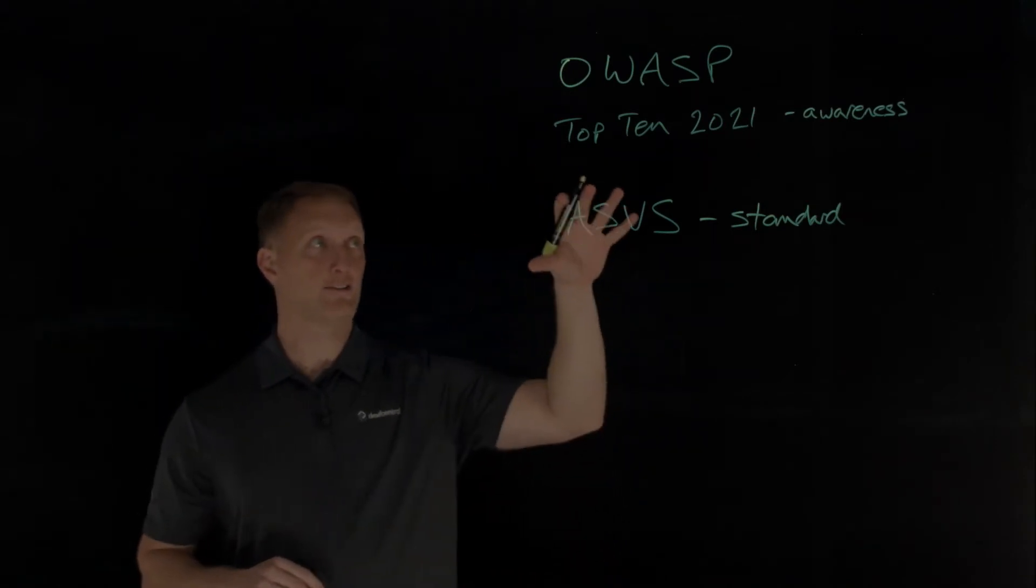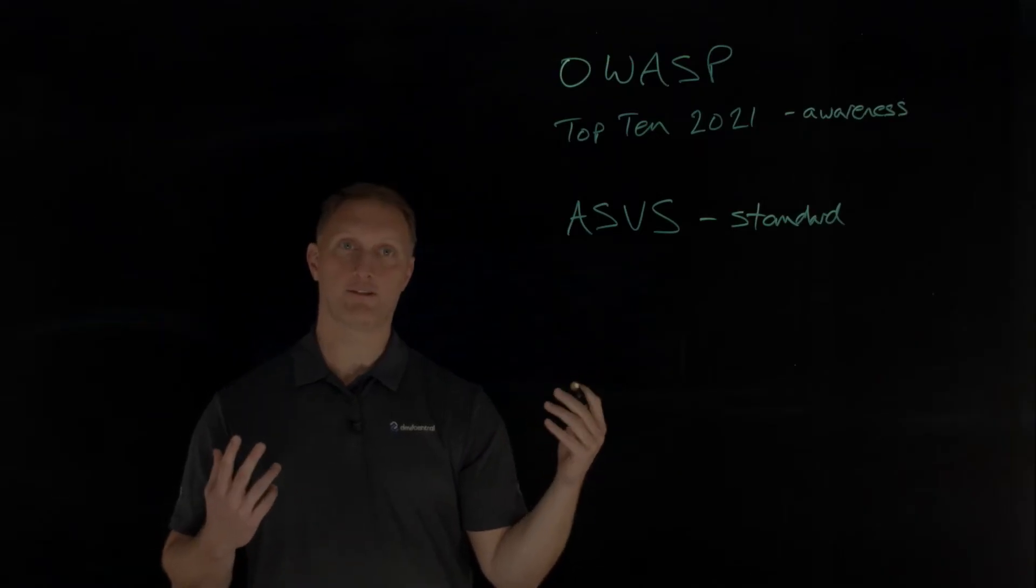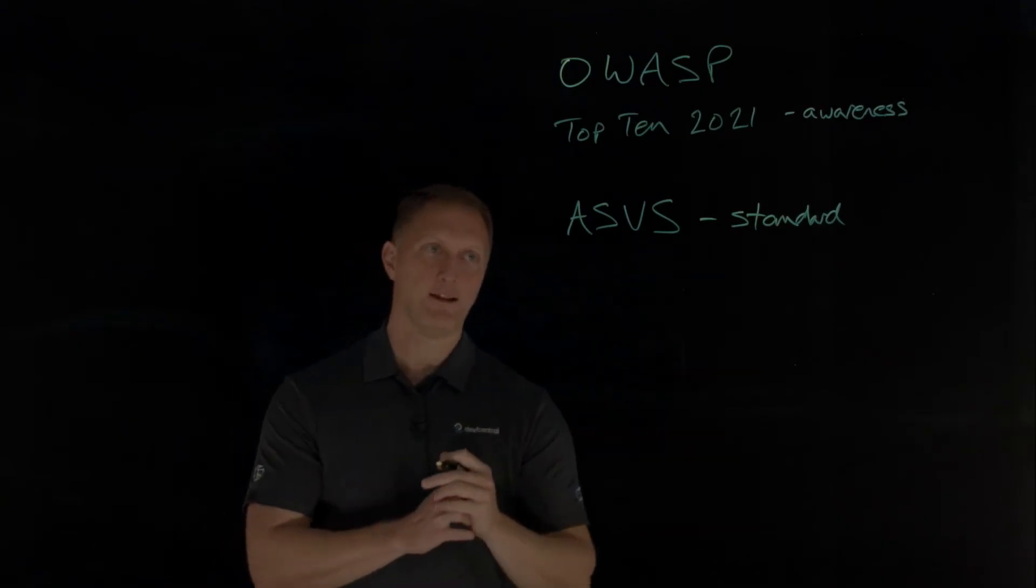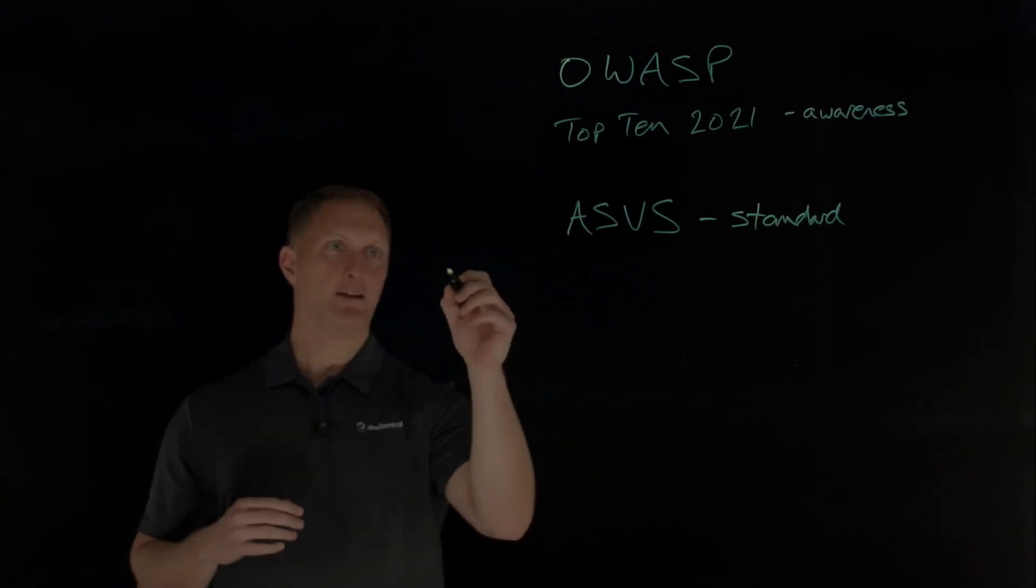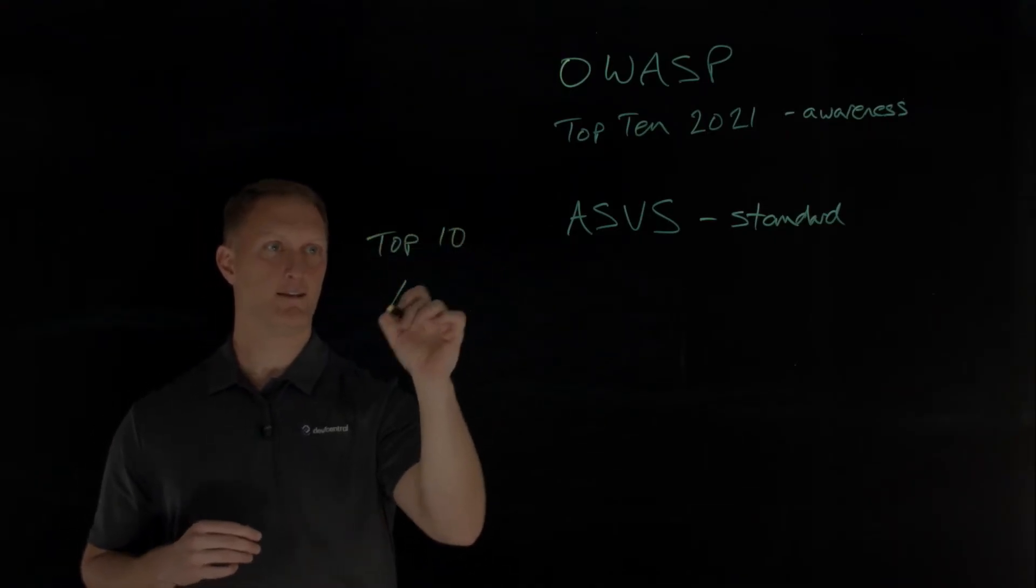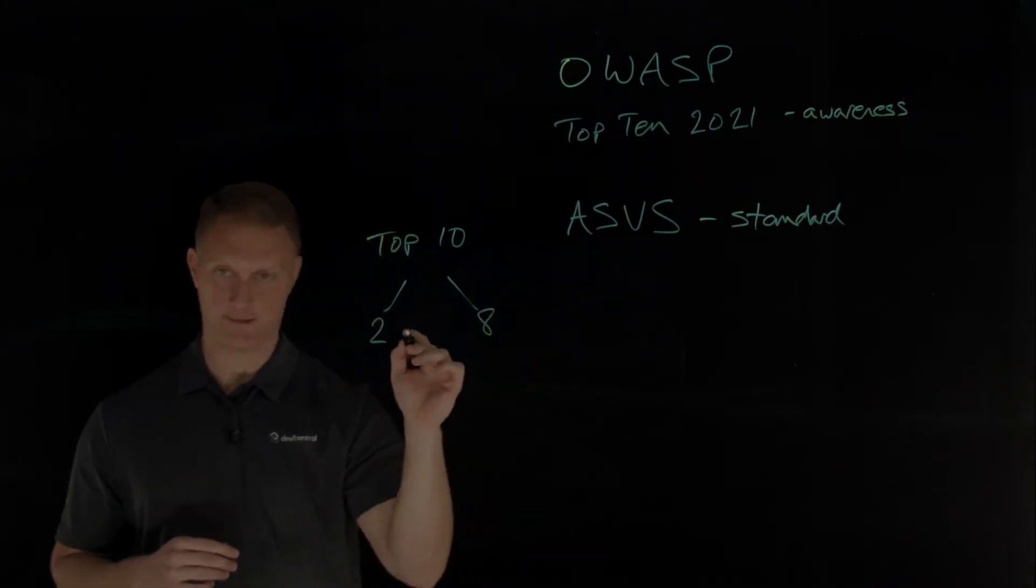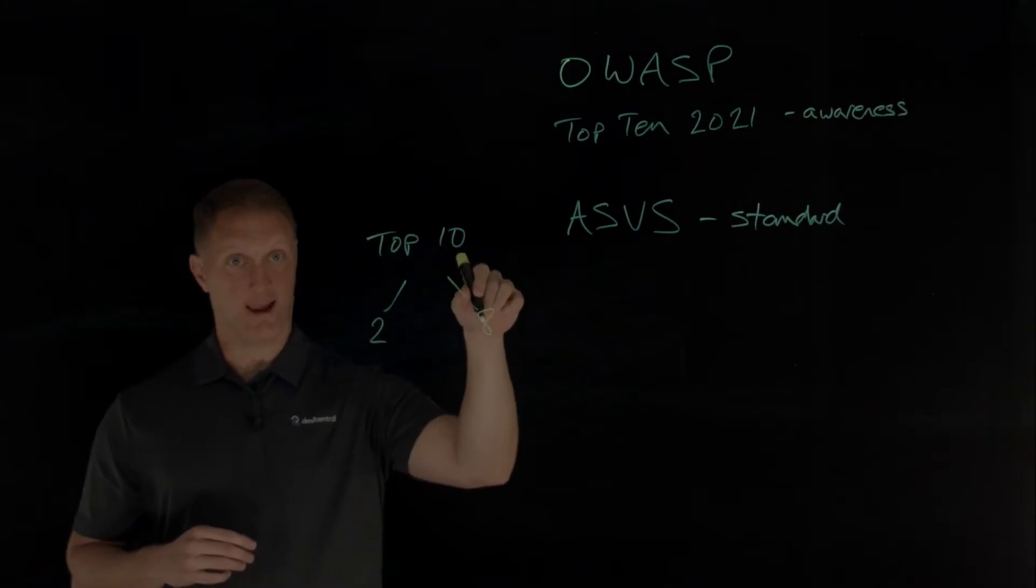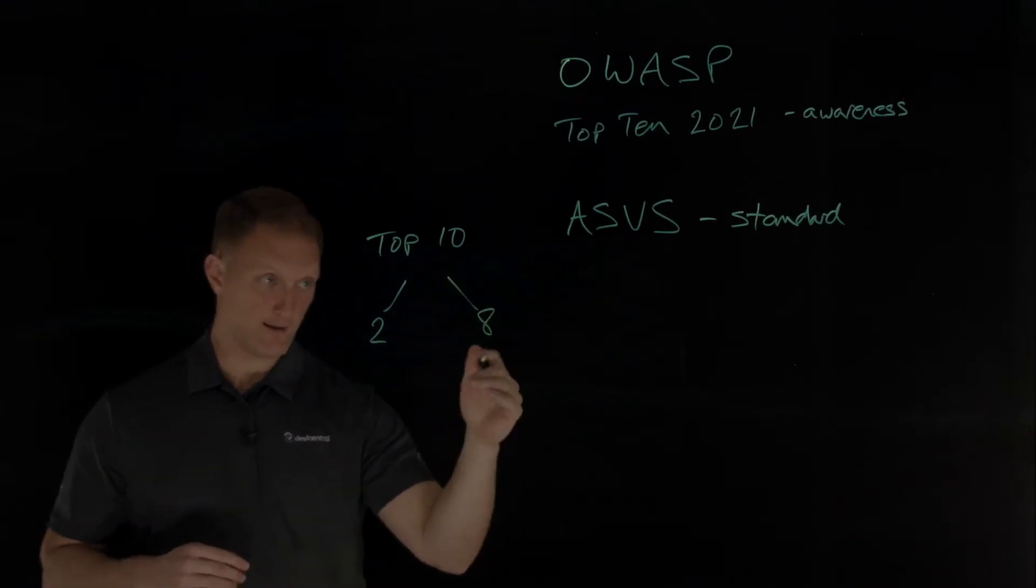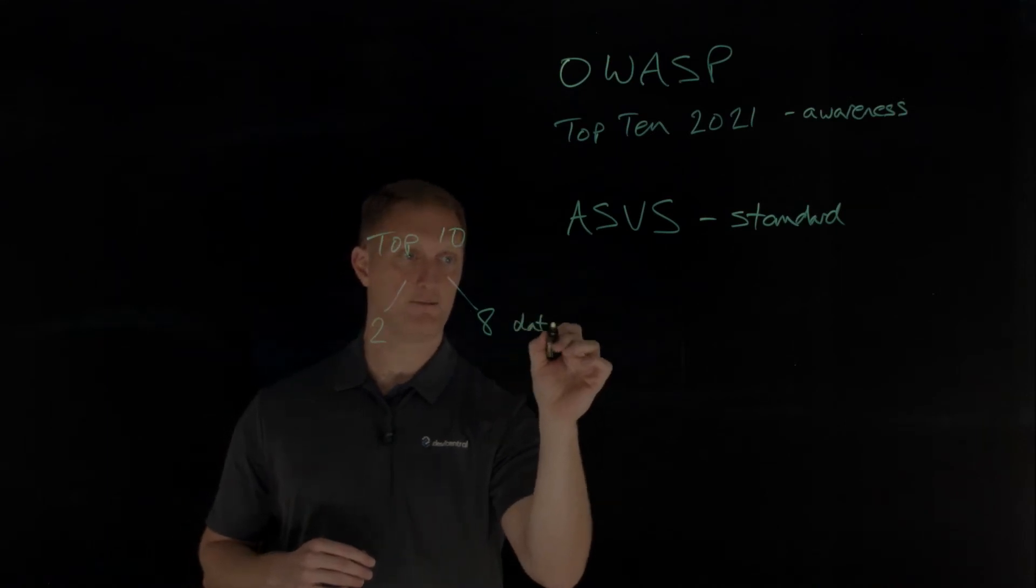This current installment, the 2021 version of the OWASP Top 10, is more data-driven than it's ever been, but it's not blindly data-driven. There are 10 categories. Eight of these categories are derived from data that was contributed from a variety of organizations. So this is data-driven.